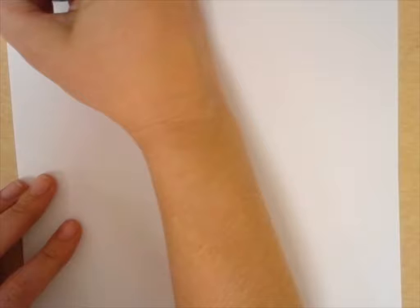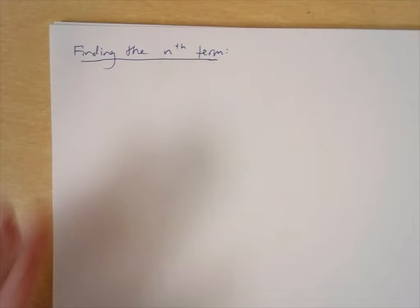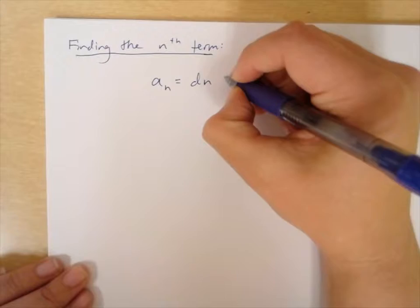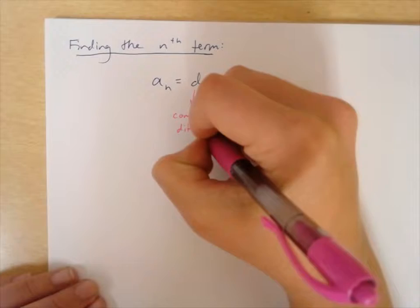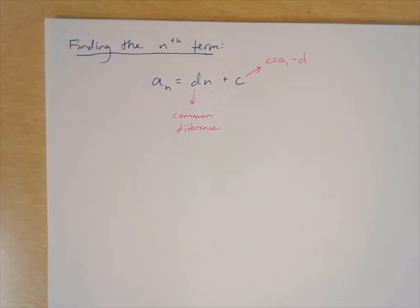Let's talk about finding the nth term. Here's how we can do that. The formula for every arithmetic sequence looks like this: a sub n equals dn plus c. Here's what each piece means: d is the common difference, and c is represented as a sub 1 minus the difference. Let's use this in an example.